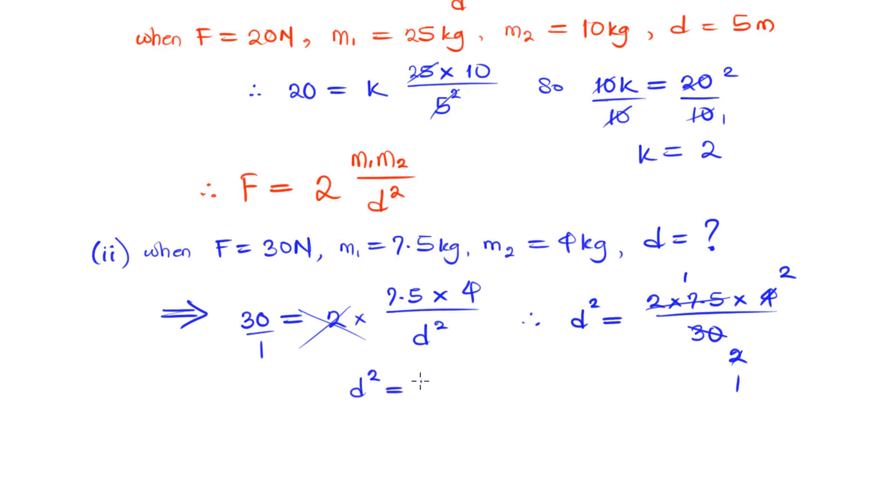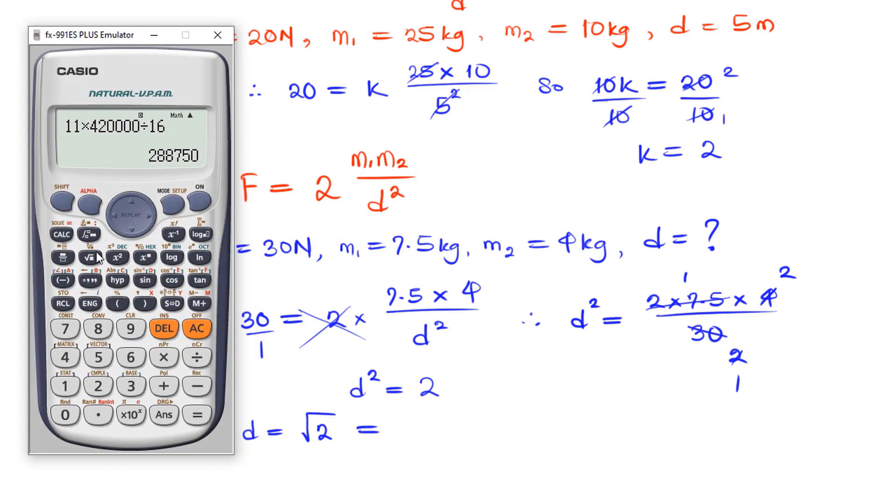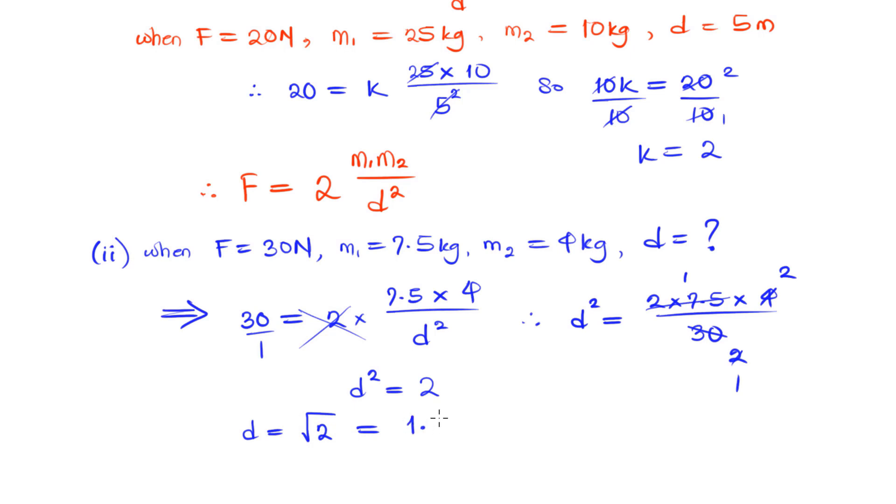So D will be the square root of 2, and square root of 2 is 1.414 meters. That's the solution to our problem.